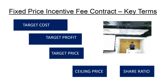Now let's understand the fixed price incentive contract through an example. Before we go through the example, let's understand some of the key parameters. Target Cost is the cost agreed between buyer and seller for a given work. Target Profit is the profit that the seller would make if target cost equals actual cost. Target Price equals target cost plus target profit. Ceiling Price is the maximum price the buyer would pay to the seller. Share Ratio is the ratio in which buyer and seller share cost overruns or underruns.